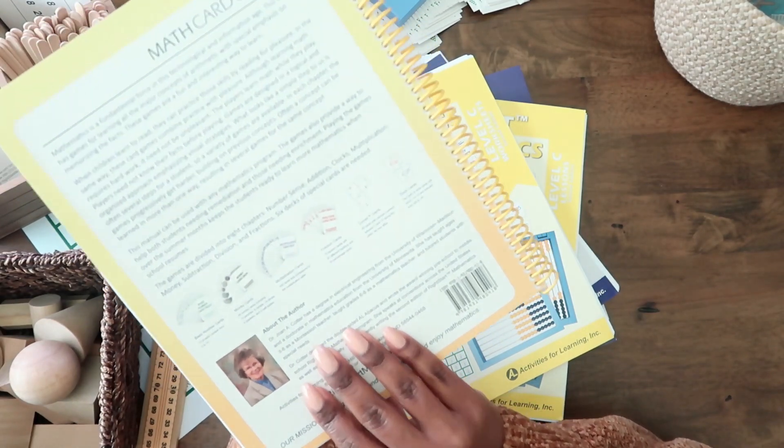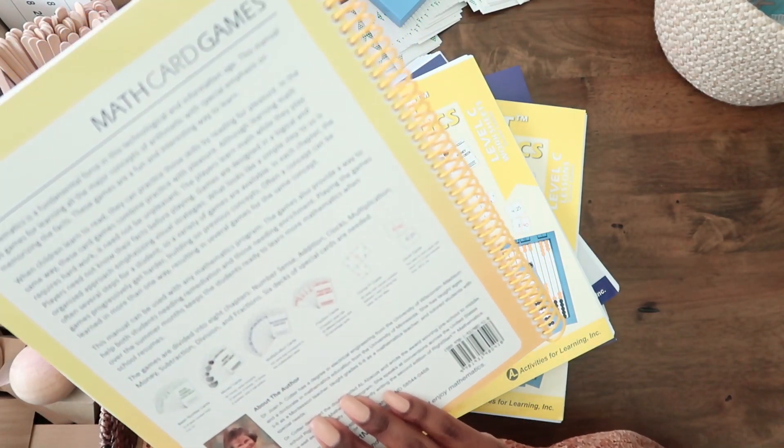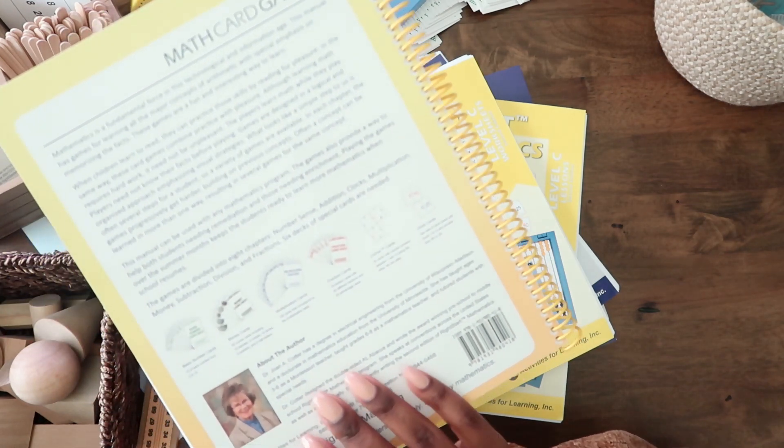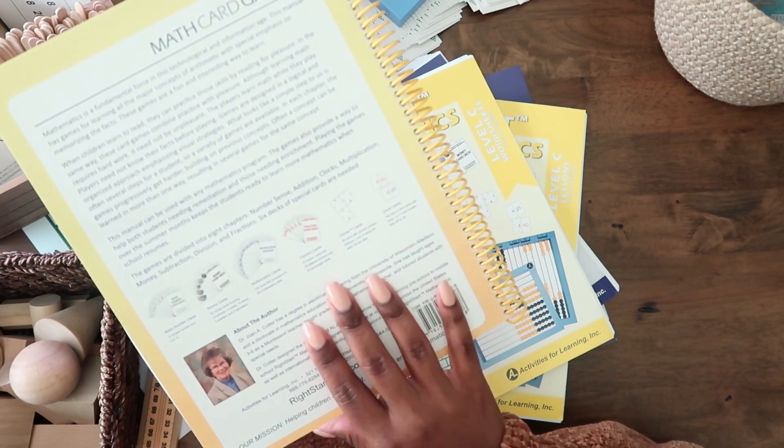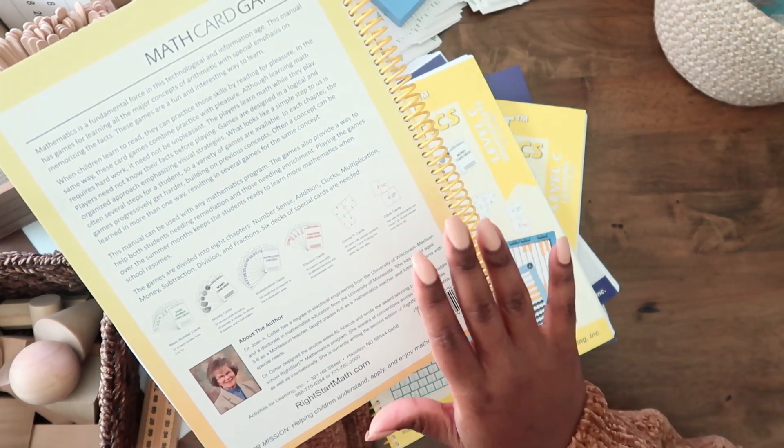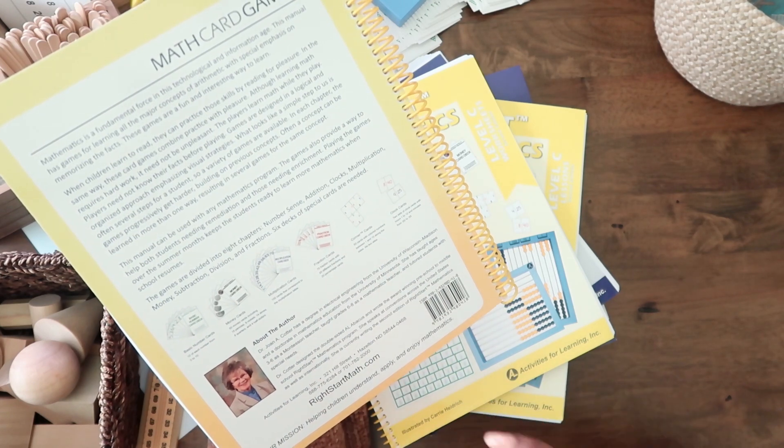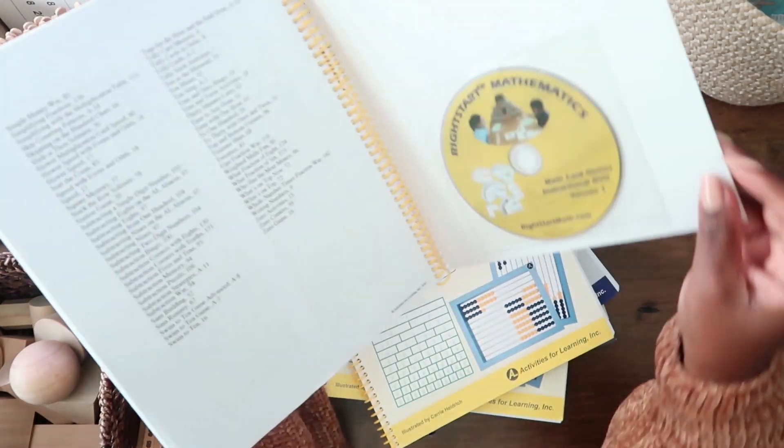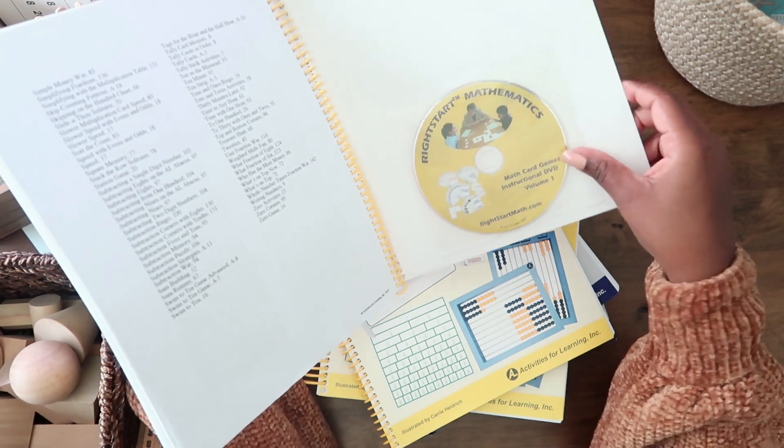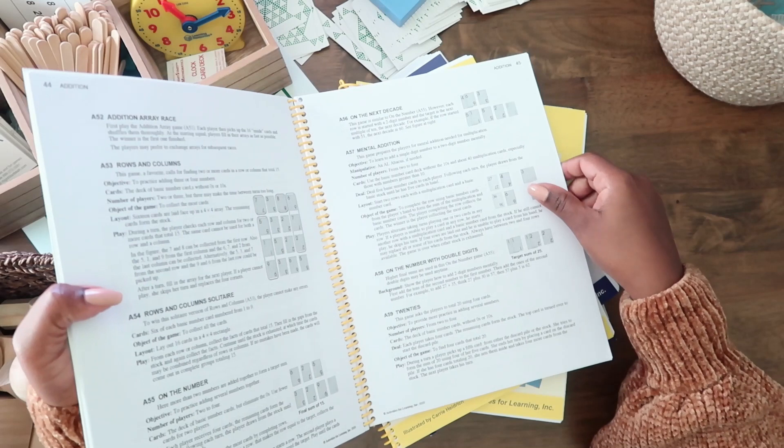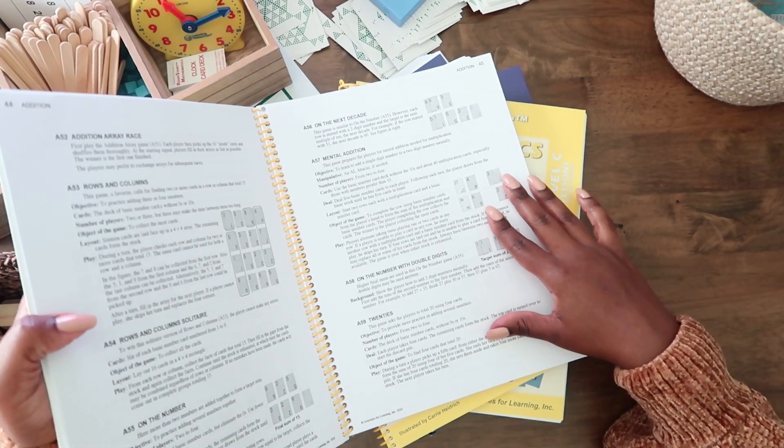This book is broken down into chapters, eight chapters, discussing number sense and money, multiplication, fractions. It has some corner cards and clocks and it tells you how to use this. It tells you how to play the games in the book and there's actually a DVD that comes with it as well, but I haven't found we really needed that. I feel like it's pretty straightforward in the explanation of the games.